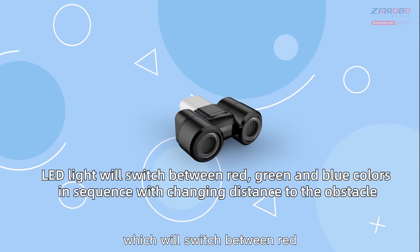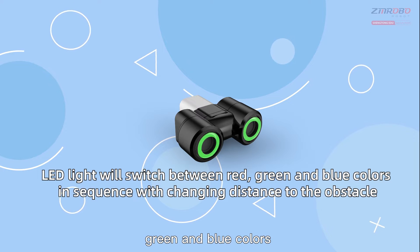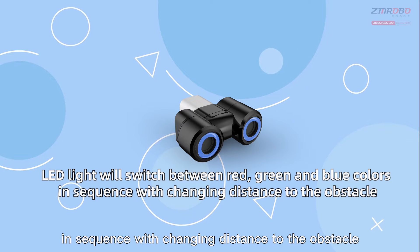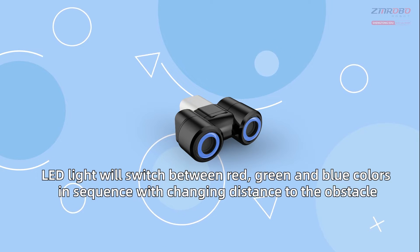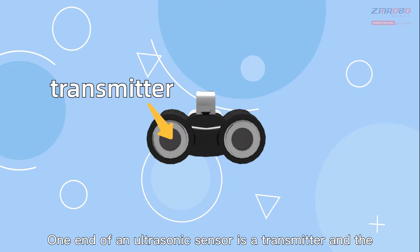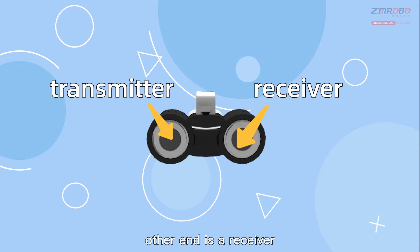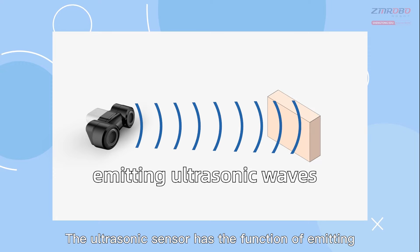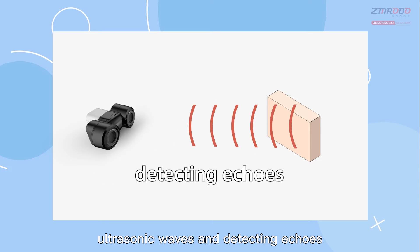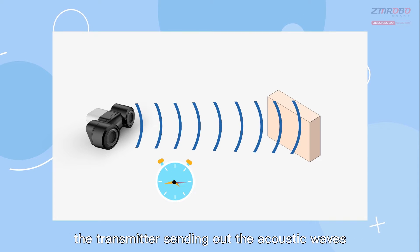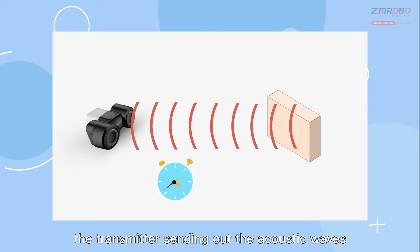The LED lights switch between red, green, and blue colors in sequence with changing distance to the obstacle. One end of an ultrasonic sensor is a transmitter and the other end is a receiver. The ultrasonic sensor has the function of emitting ultrasonic waves and detecting echoes.